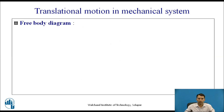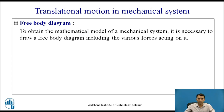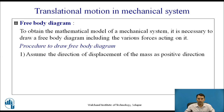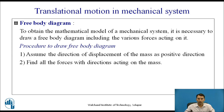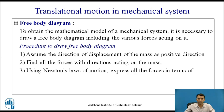For mathematical modeling of a mechanical system, one has to draw a free body diagram. To obtain the mathematical model, it is necessary to draw a free body diagram including the various forces acting on it. The procedure: first, assume the direction of displacement of the mass as the positive direction. Next, find all the forces with their directions acting on the mass. In the third step, use Newton's law of motion to express all the forces in terms of displacement or velocity of the mass.